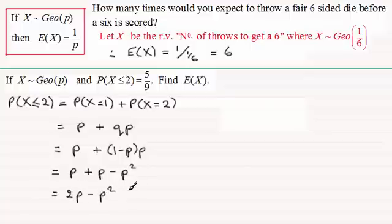Now we know that the probability of X being less than or equal to two we're told is equal to five-ninths. So therefore what we've got here is that 2P minus P squared must be equal to five-ninths.